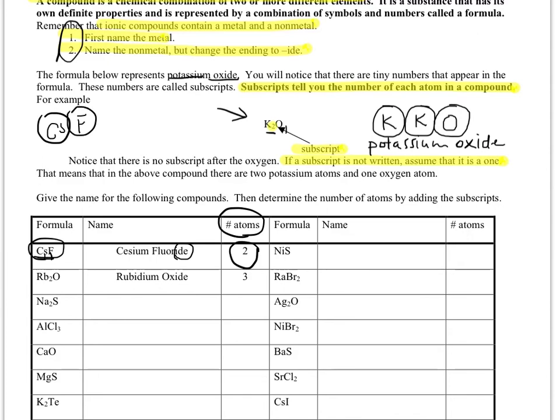In our next example, first thing listed is always our metal, so Rb stands for rubidium, and the second thing listed is oxygen, so we call it oxide.